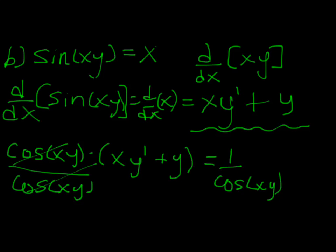And of course that's gone. And then what we can do is, since this is gone right here, all we have left that doesn't have y prime next to it is that y. So what I'm going to do is simply subtract y from both sides. So I'm going to have xy prime is equal to 1 over cos xy minus y.